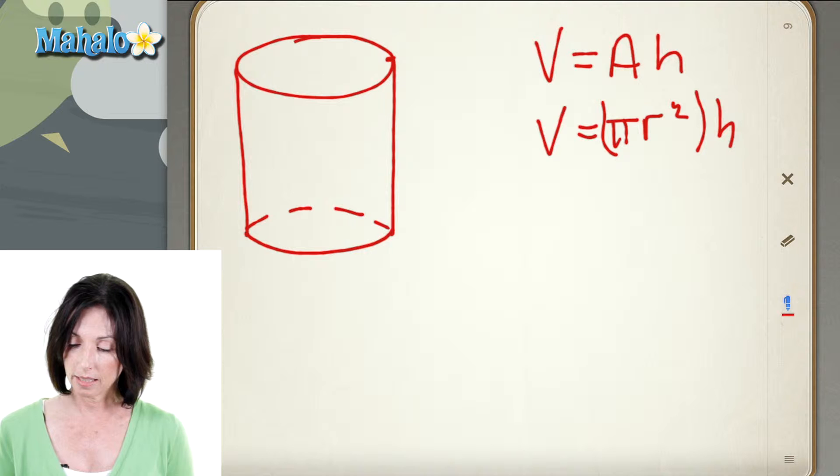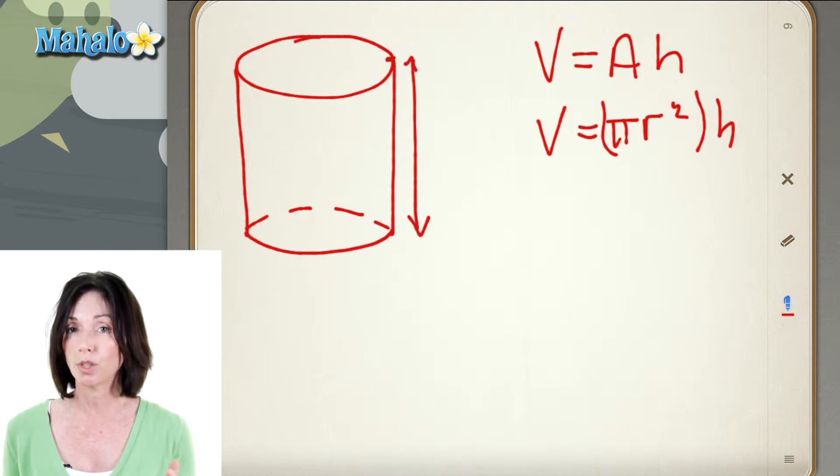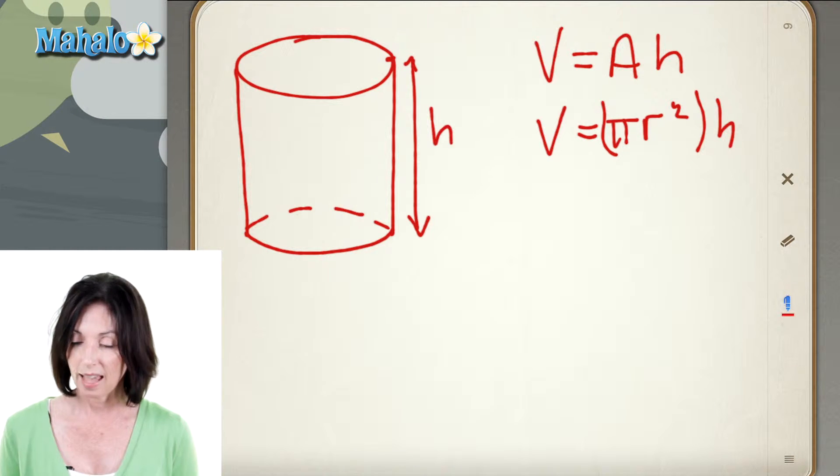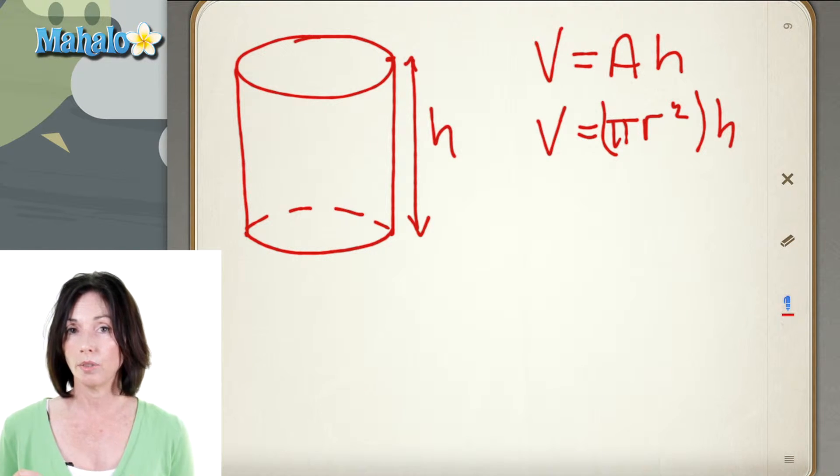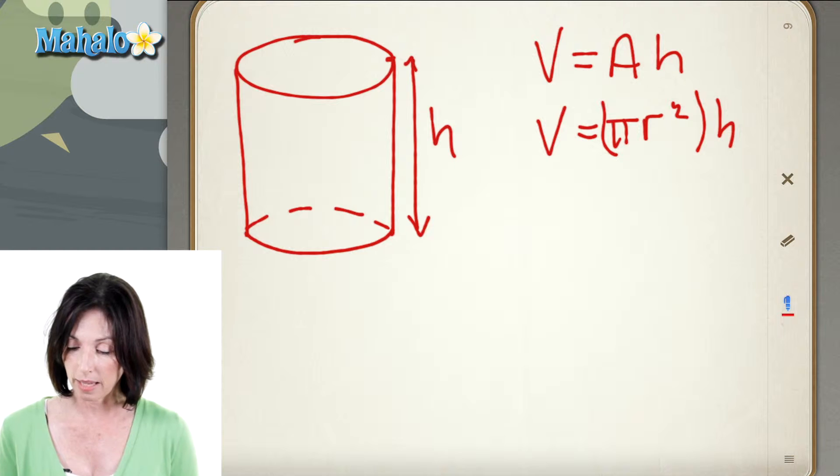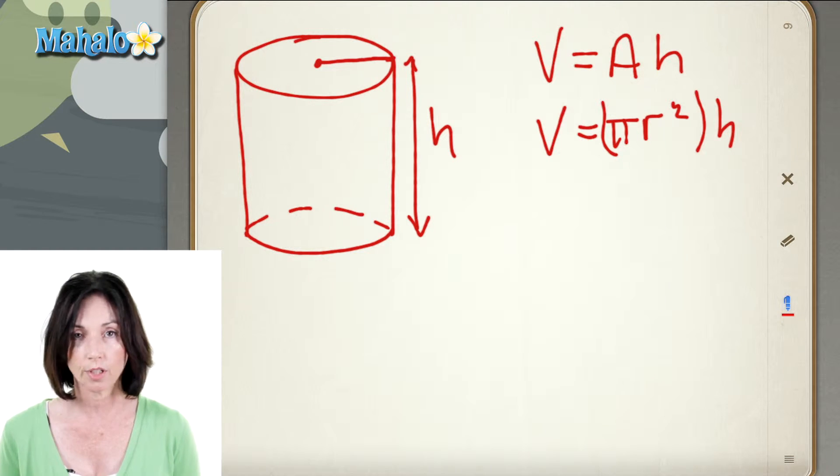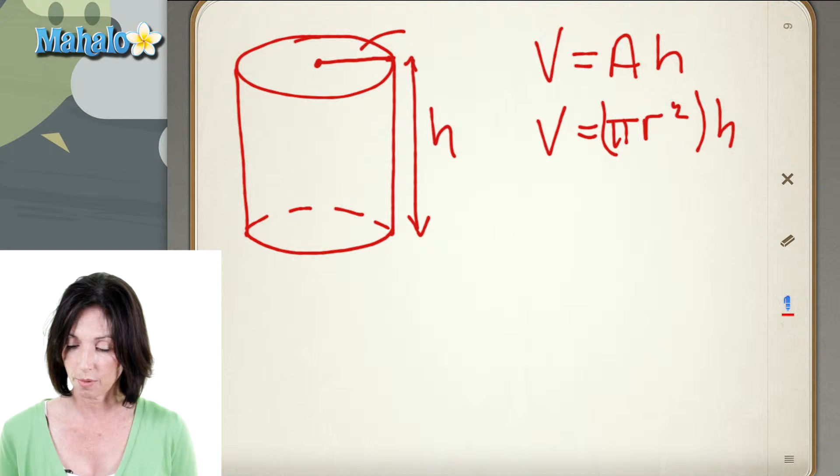Now, the height is this vertical distance, basically the length of the cylinder, the distance between its two circular bases. And the radius that you need to calculate the area of the base is the distance from the center to the edge. So that would be the radius right there.